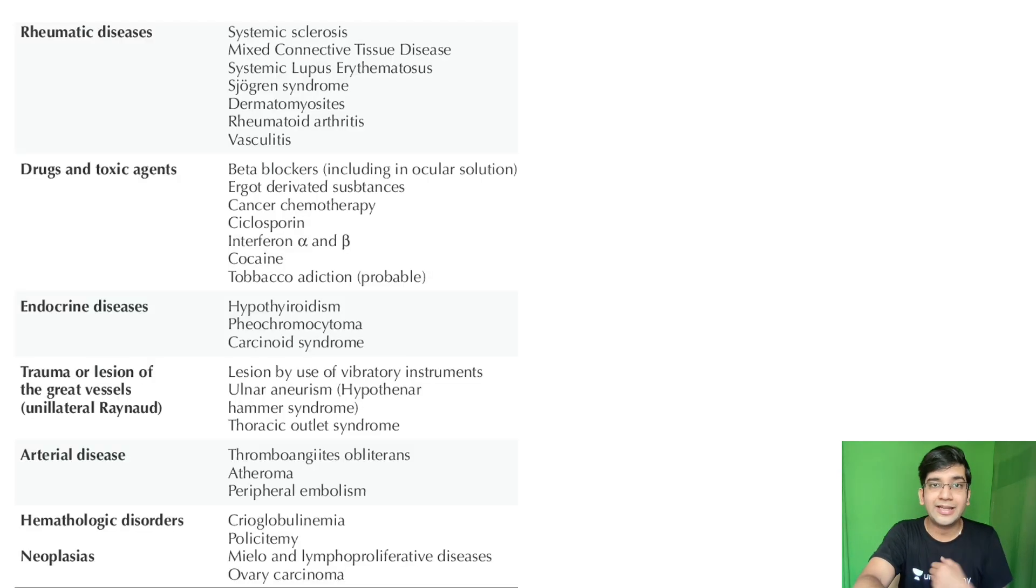The reason why clinical medicine alone can't be the answer is this is the problem. I have all these things, these are all the causes of your Raynaud's phenomenon from rheumatology textbooks. Systemic sclerosis, mixed connective tissue disorder, SLE, Sjögren's, dermatomyositis, rheumatoid arthritis. That's why I said all the four options can cause Raynaud's. Not only that, look at that. Drugs, endocrine problem, trauma, arterial disease, everything.